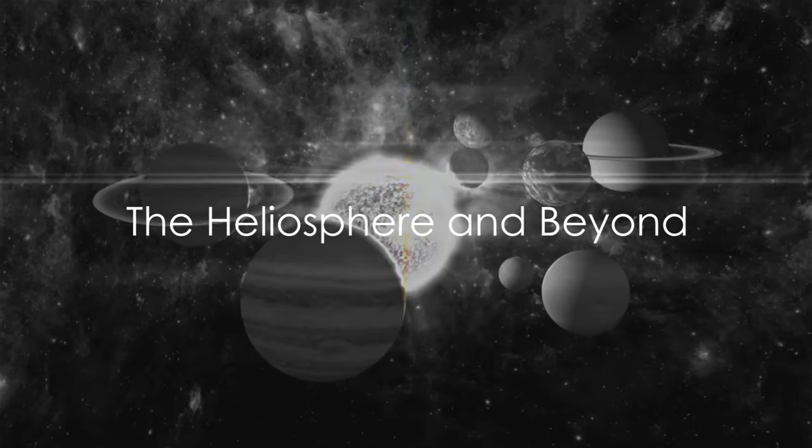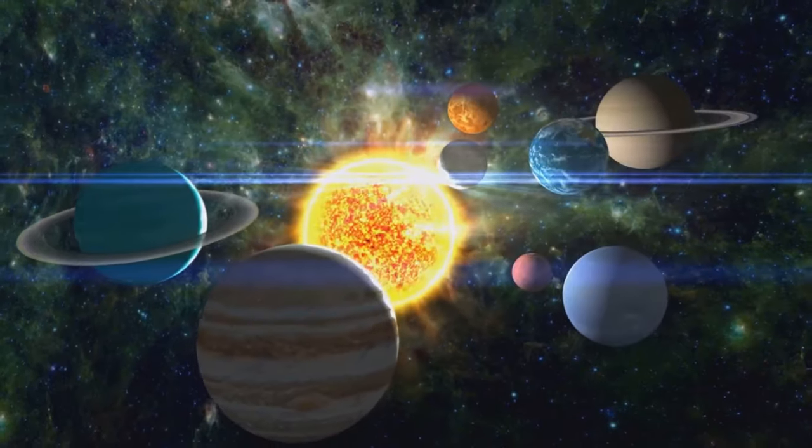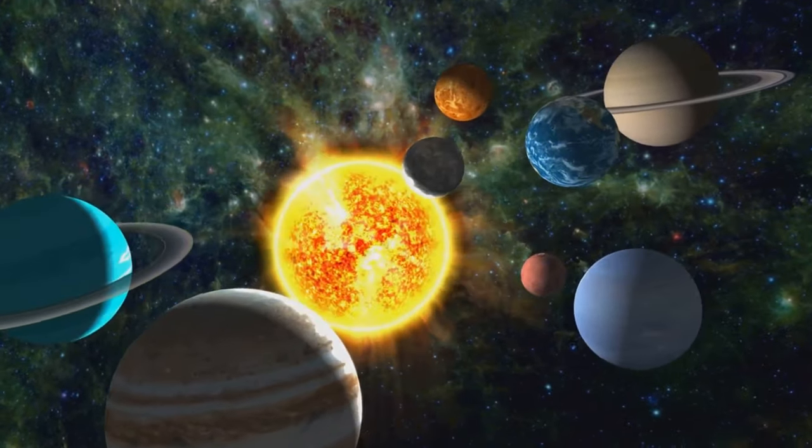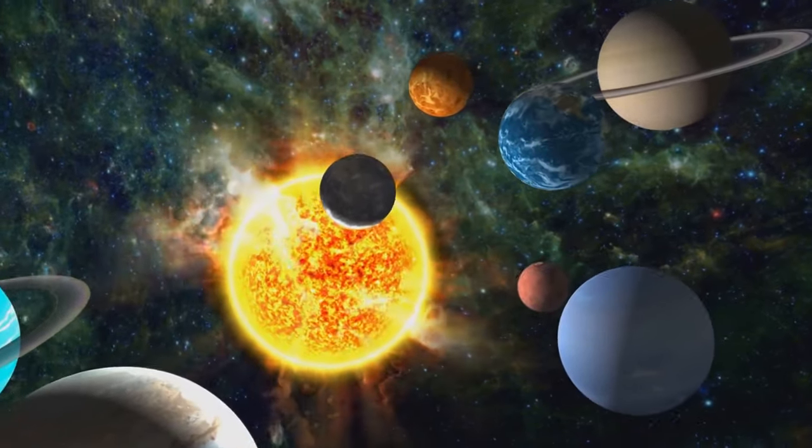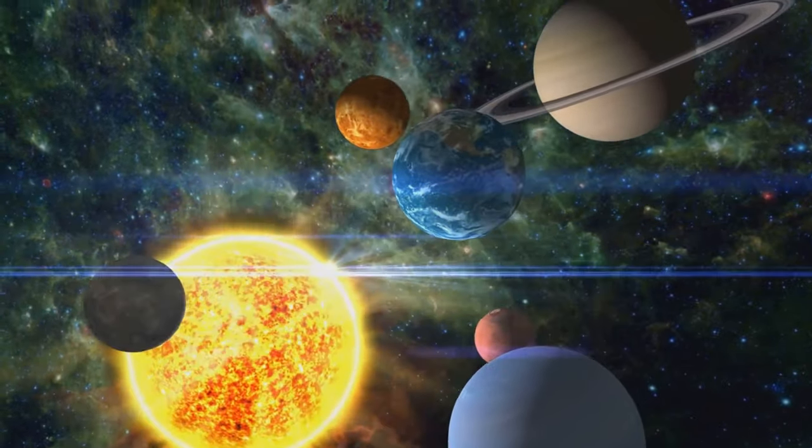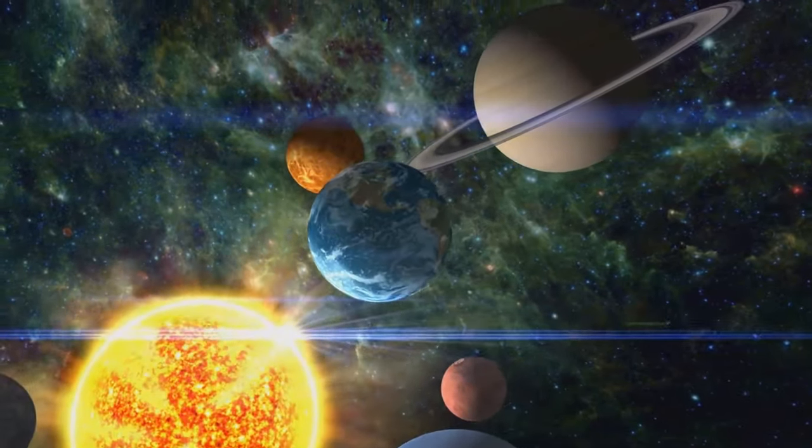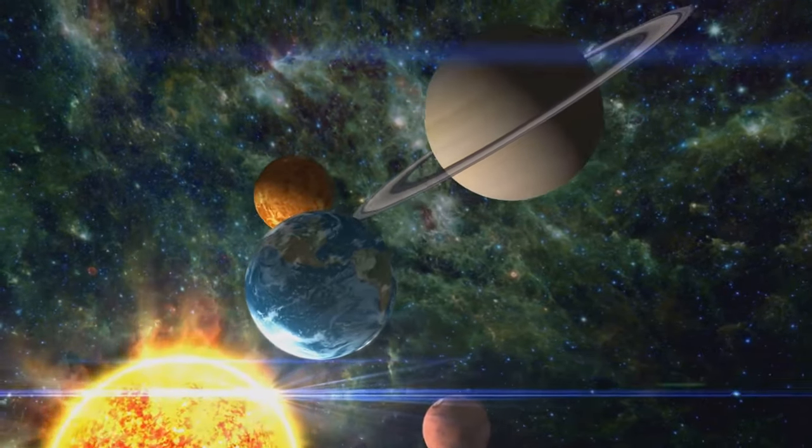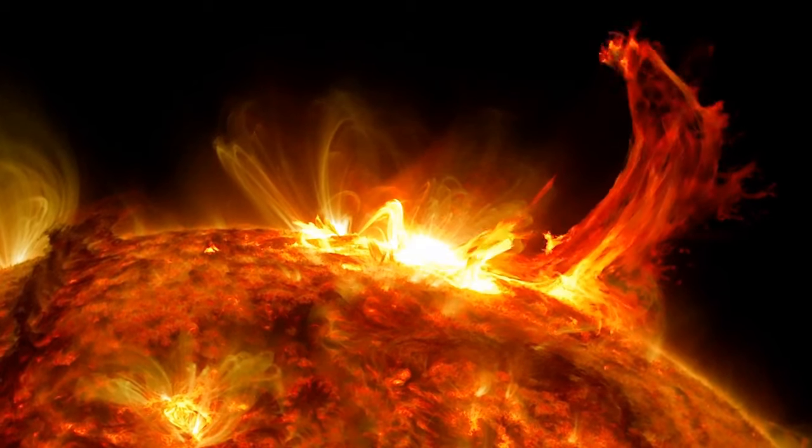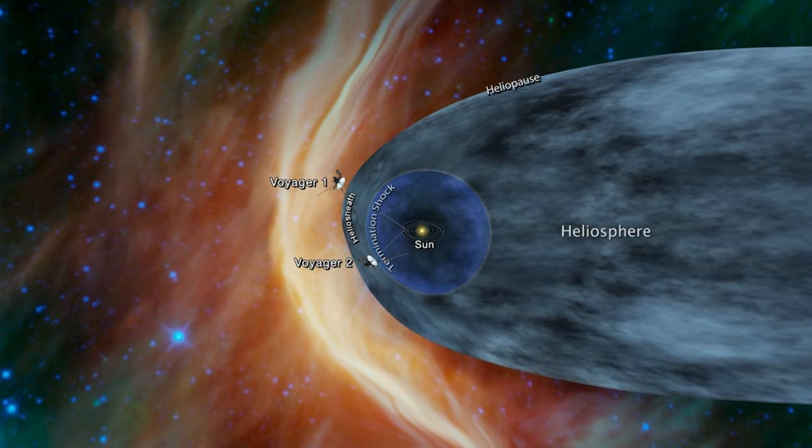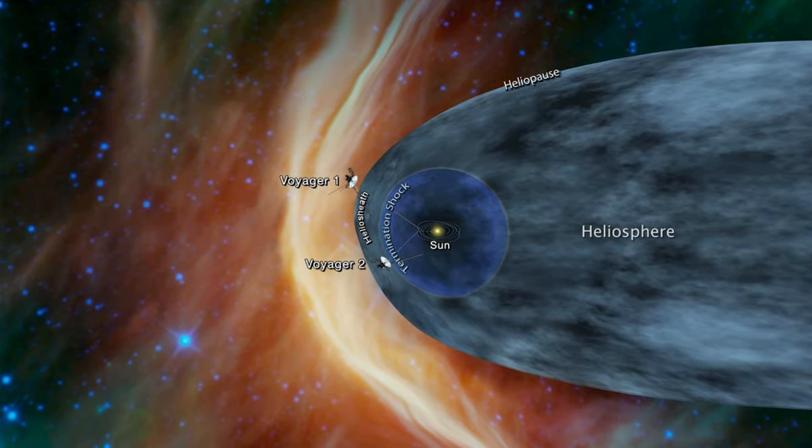As the solar wind expands into the vast expanse of space, it forms a colossal bubble, the heliosphere, encompassing the Sun and its retinue of planets. But as it ventures farther into the cosmic void, the solar wind thins, succumbing to the pressure of interstellar space.